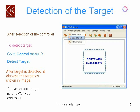When the H JTAG server window opens up, the first thing to do is detect your target. To detect your target, go to the Control menu and select Detect Target. After the target is detected, it displays the target as Cortex-M3 with hex address 4BA00477. This is the result for the LPC1768 controller.